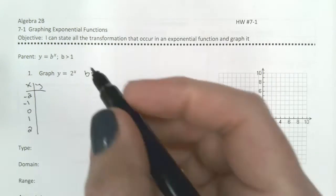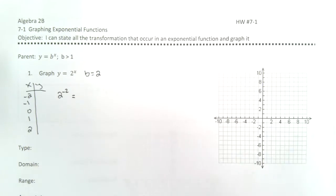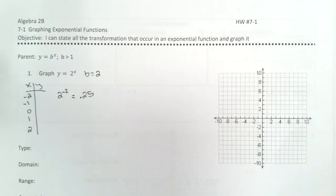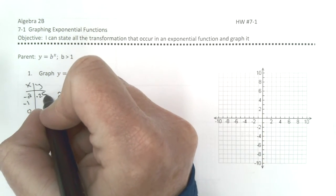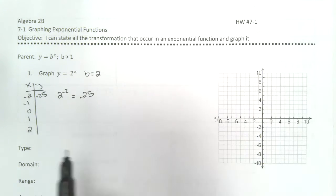You could put this into your calculator. If you punch 2 to the negative 2 in your calculator, it's going to tell you that the answer is 0.25 because negative exponents make for fractions.